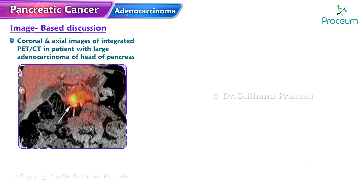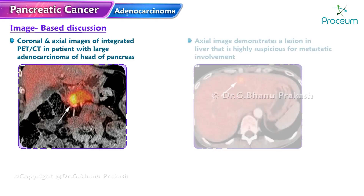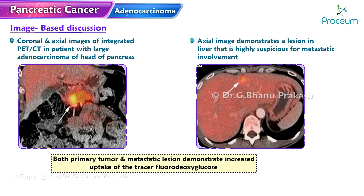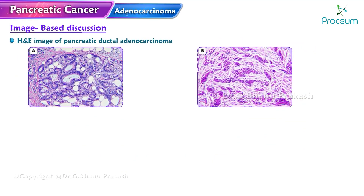Coronal and axial images of an integrated PET-CT in a patient with a large adenocarcinoma of the head of the pancreas are shown. The axial image demonstrates a lesion in the liver that is highly suspicious for metastatic involvement. Both the primary tumor and the metastatic lesion demonstrate increased uptake of the tracer fluorodeoxyglucose. A histology image of pancreatic ductal adenocarcinoma is also presented.